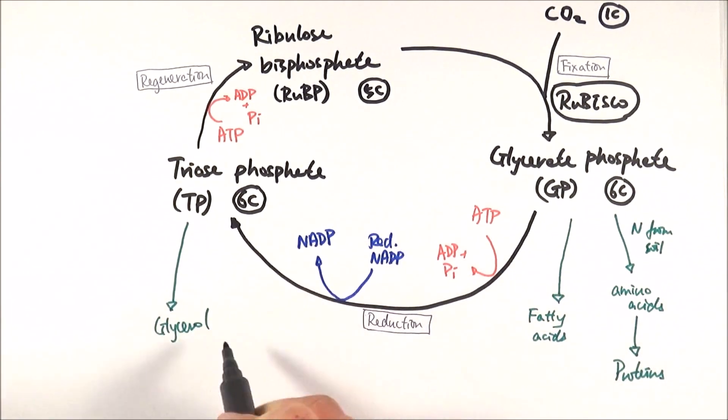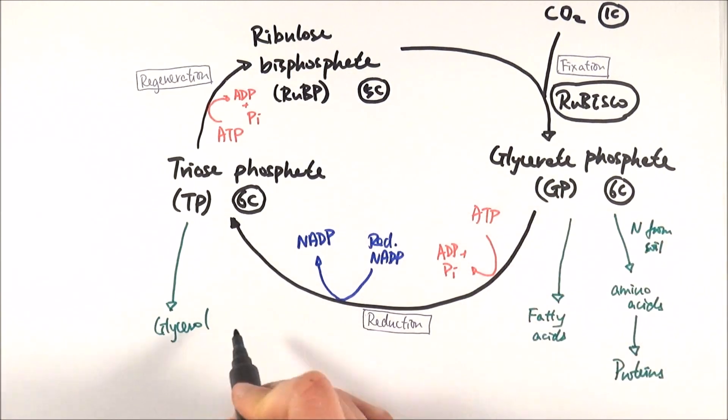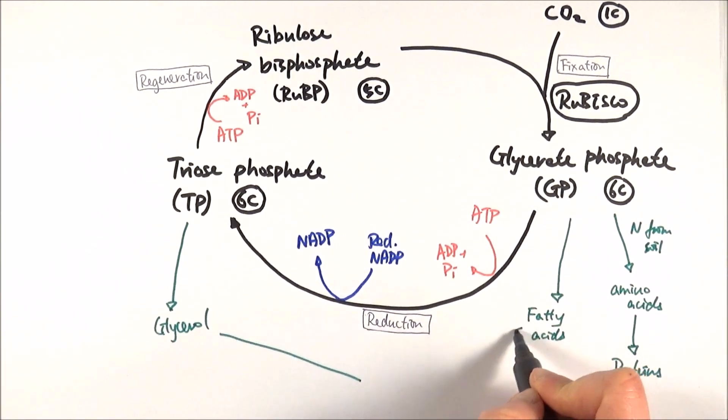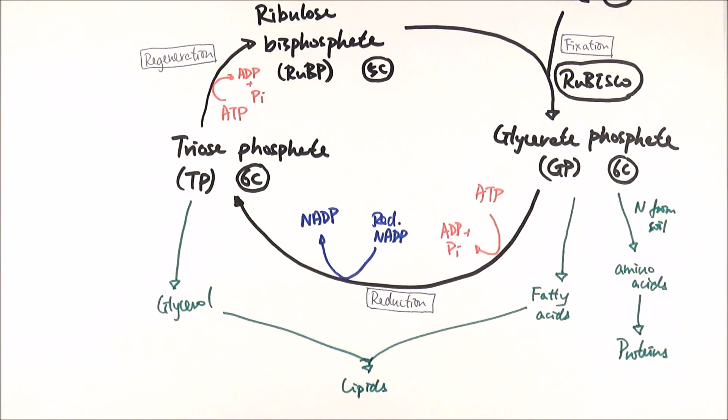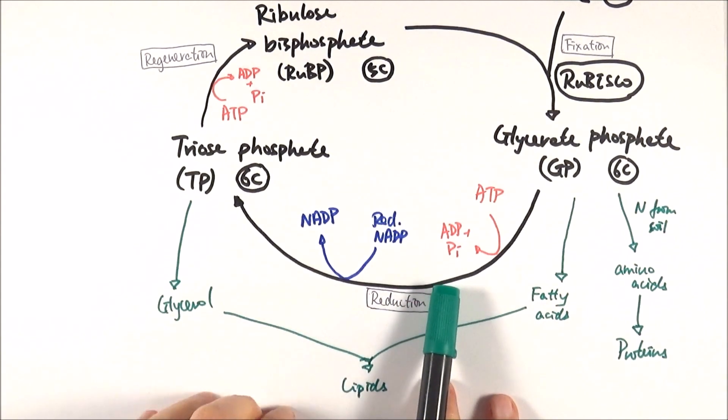So the glycerol made from TP and the fatty acids made from GP can combine together to make lipids, for example, triglyceride or phospholipids. And as you remember, lipids like phospholipids are used to make the cell membrane or any sort of membrane. So that's why this is also really important.